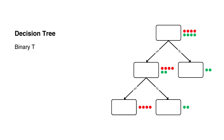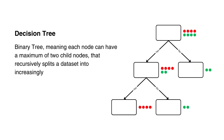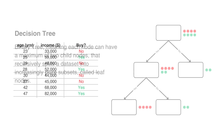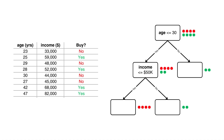A decision tree is a binary tree, meaning each node can have a maximum of two child nodes, that recursively splits a dataset into increasingly pure subsets called leaf nodes — they contain data points that are mostly from a single class. For example, suppose we have a dataset with the age of a customer, their income, and whether or not that customer will buy a product. A trained decision tree to predict whether a customer will buy the product might look something like this.